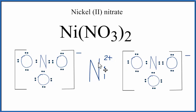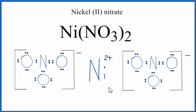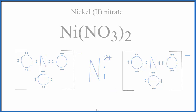Understand that we've drawn just one formula unit here. Nickel two nitrate exists as a crystal, and it's made up of a bunch of these formula units in a regular pattern. Still, this is useful to understand the arrangement of electrons in nickel two nitrate. This is Dr. B, and thanks for watching.